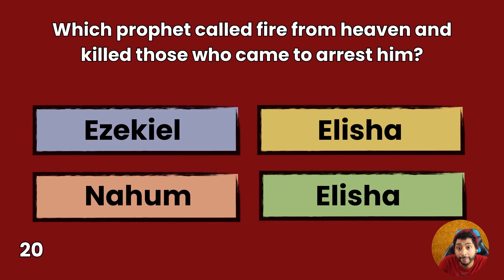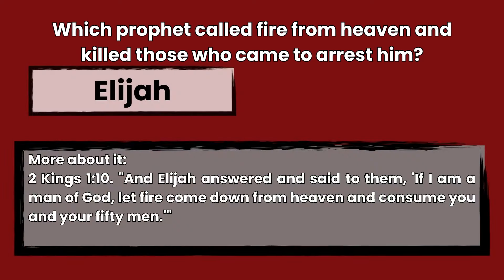Question 20: Which prophet called fire from heaven and killed those who came to arrest him? Ezekiel, Elisha, Nahum, or Elijah? Answer: Elijah. 2 Kings 1:10 — And Elijah answered and said to them, If I am a man of God, let fire come down from heaven and consume you and your fifty men.